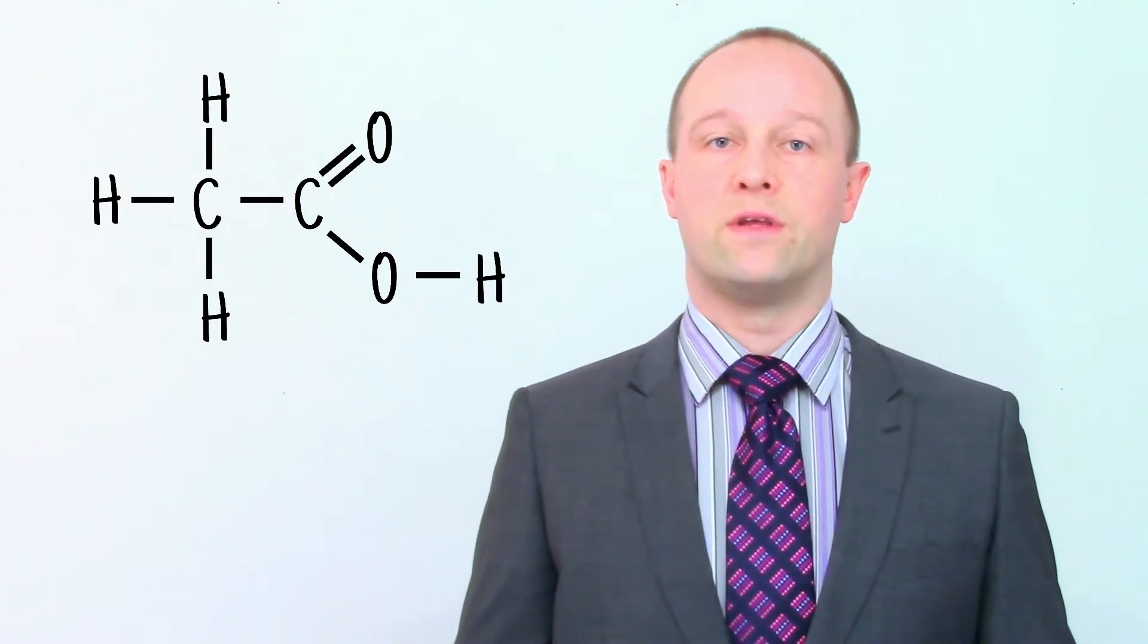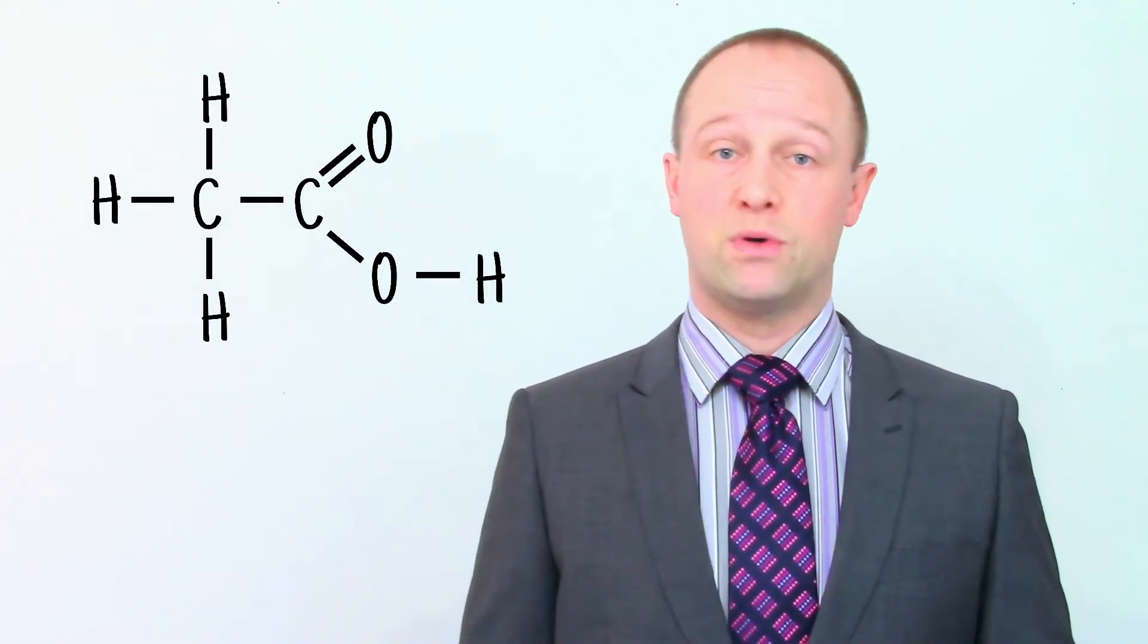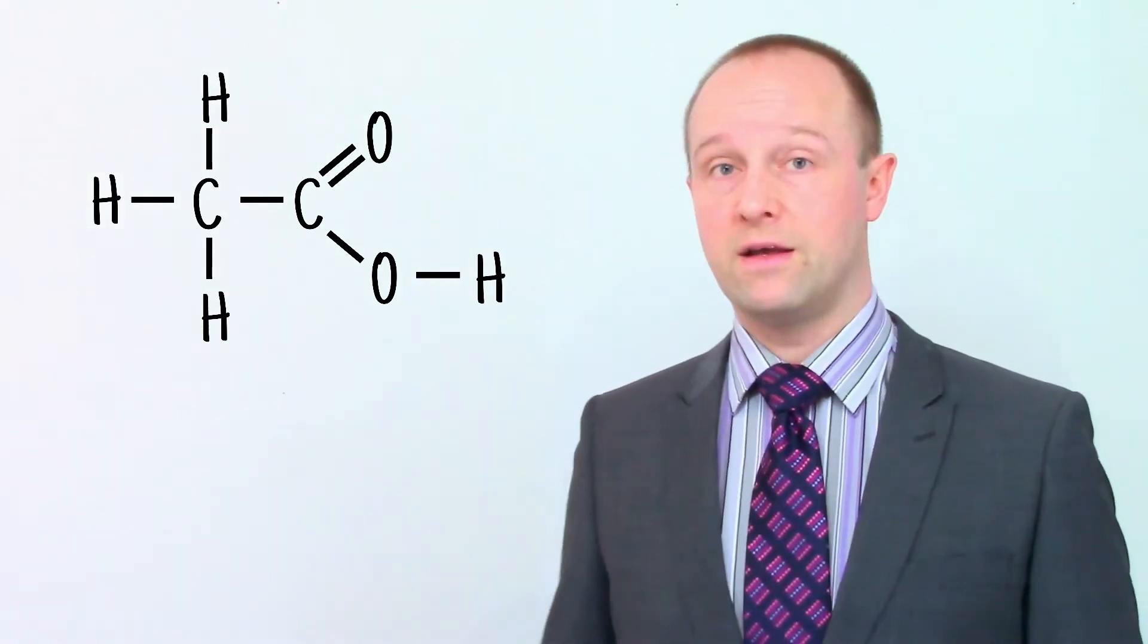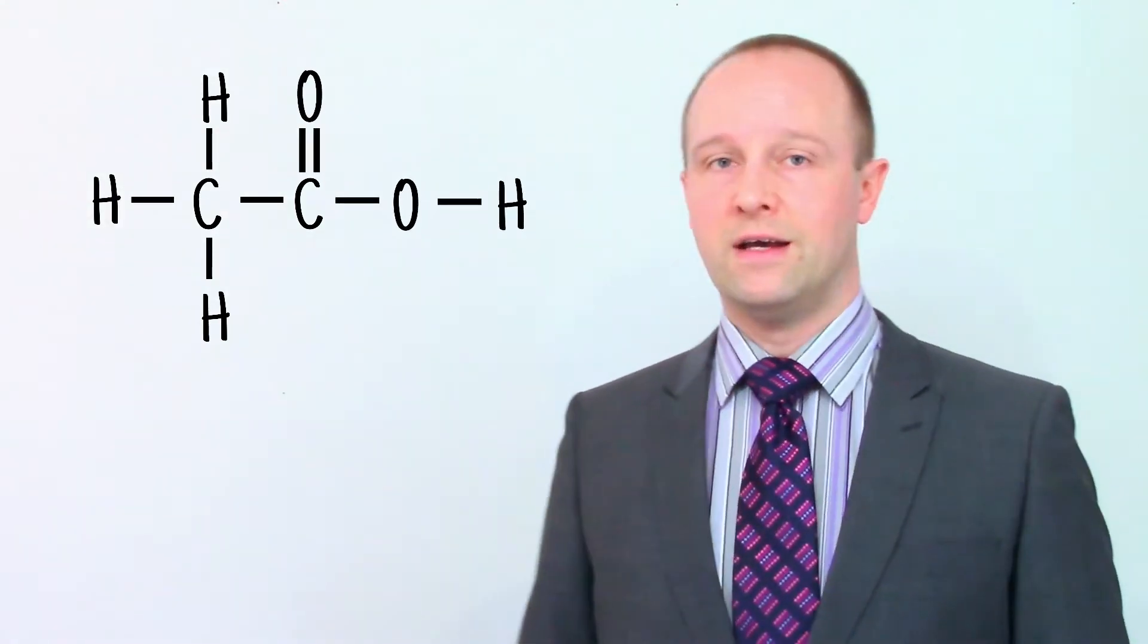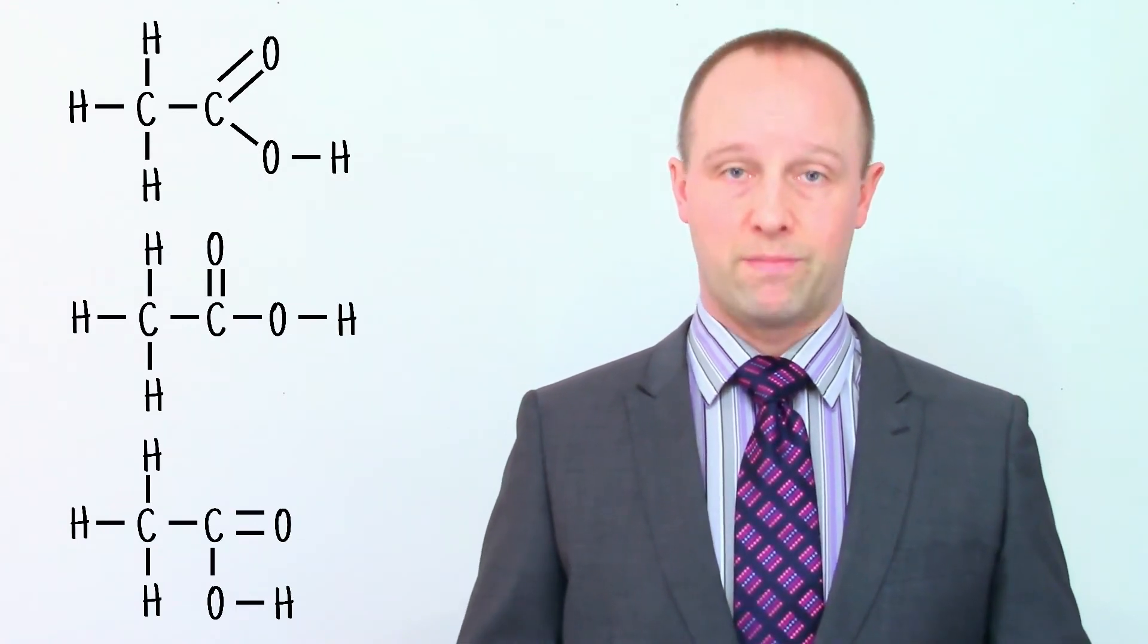At this point, I want to note that the chemical structure isn't drawn consistently across different exam boards, or even in different textbooks. Sometimes they'll draw it as I have here, sometimes they'll draw it like this, and sometimes they'll draw it like this. All they're doing is moving around the angles of the bonds a little bit. They're all the same compound, really.